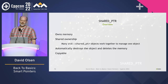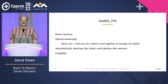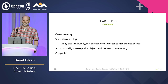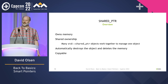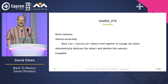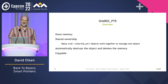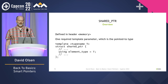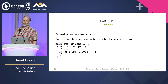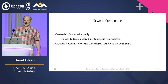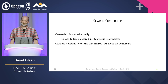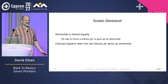shared_ptr is also a smart pointer type that owns what it points to. The big difference from unique_ptr is that, as the name implies, ownership is shared rather than unique. Many shared_ptr objects can work together to jointly own an object and its memory. The object will be automatically destroyed and its memory freed when the last shared_ptr object goes away. Unlike unique_ptr, shared_ptr objects are copyable because shared ownership can be copied, even when unique ownership cannot. Like unique_ptr, shared_ptr is defined in the standard header <memory> and has one template parameter which is the type of the object pointed to.